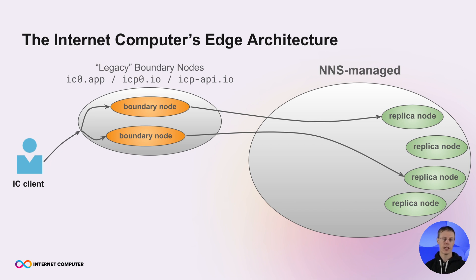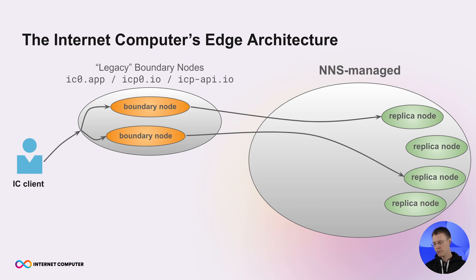Now we in the Boundary Node team have been working very hard to change that and came up with the new decentralized edge infrastructure with new decentralized boundary nodes. What does that mean? We split today's boundary nodes, so these legacy boundary nodes, into two components.